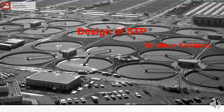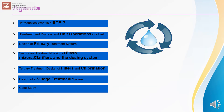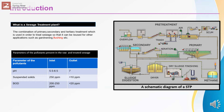Before we begin, let me give you an idea of what we are going to see. First we will see what is an STP — the definition of STP. Next we will see the pretreatment process and the unit operations involved, then the design of the primary treatment system, followed by the secondary treatment system, then the tertiary treatment system, then how the sludge generated in the secondary treatment system is treated. Finally, I would explain the design of the STP with the help of a case study.